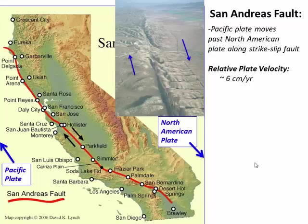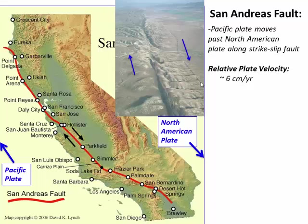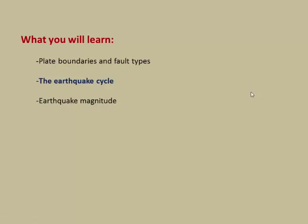Here's an example of a strike-slip fault — the San Andreas Fault. It runs the length of California from the Los Angeles area all the way up to northern California, and it is the plate boundary between the North American Plate and the Pacific Plate. Relative to one another, the Pacific Plate is moving northwest and the North American Plate is moving southeast. Here is an example from southern California where we can see the fault as a big crack in the earth literally separating totally different topography on either side. The San Andreas Fault is moving about six centimeters per year relative to the two plates.